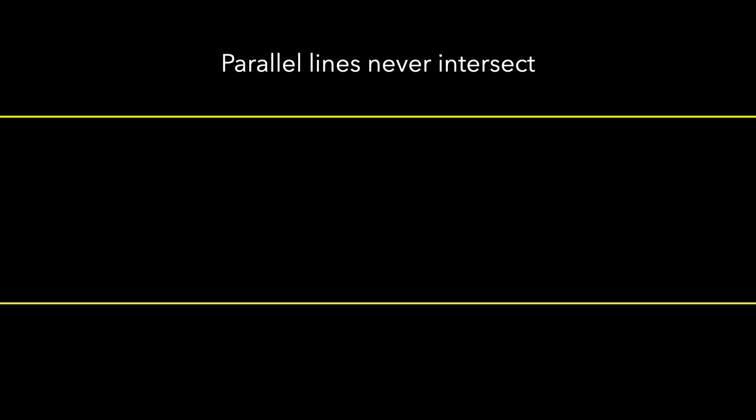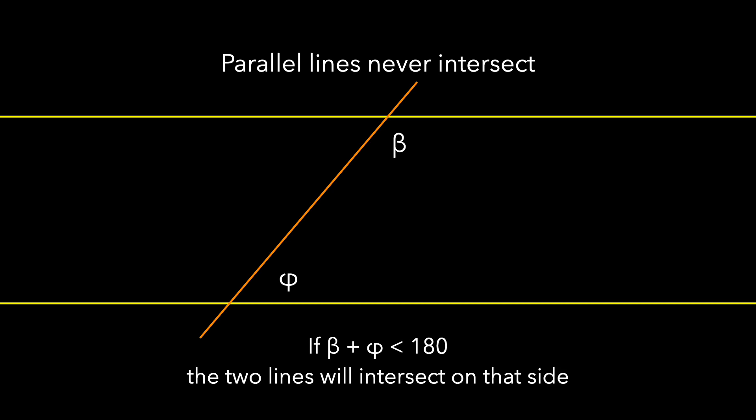But first, let's go back to the plane. One of the ideas we had about parallel lines in the plane is that they never intersect. This came from our first version of the parallel postulate — that if phi plus beta added up to less than 180, then we could extend those two lines so they would intersect on that side.